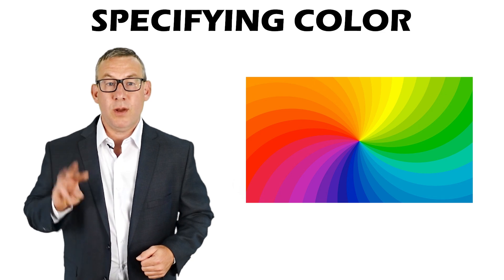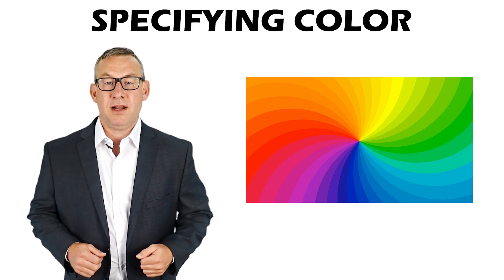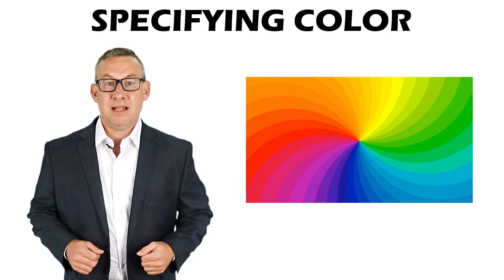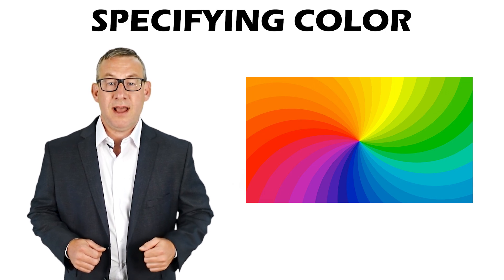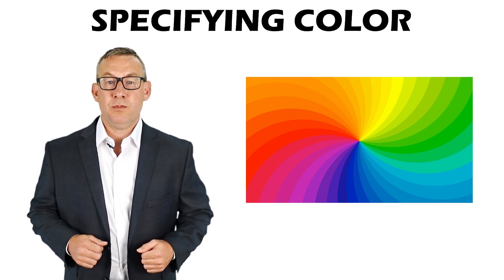There are three ways to specify color: red, green, and blue, or RGB; cyan, magenta, yellow, and black, or CMYK; and hue, saturation, value, or HSV.